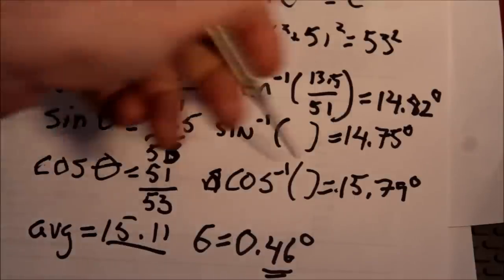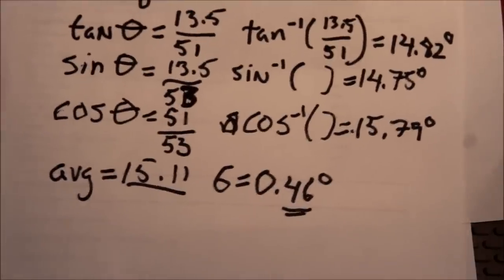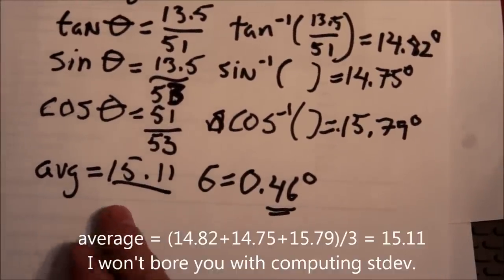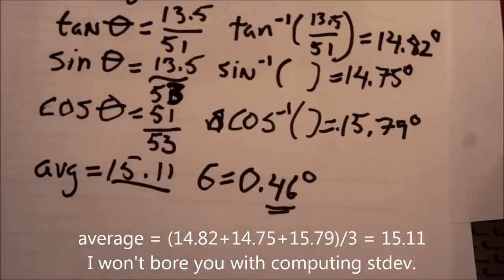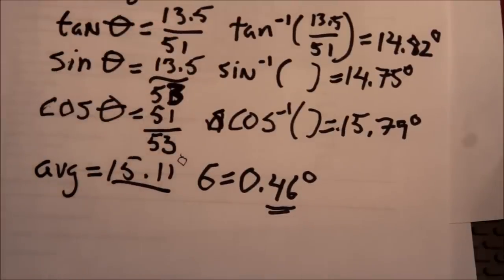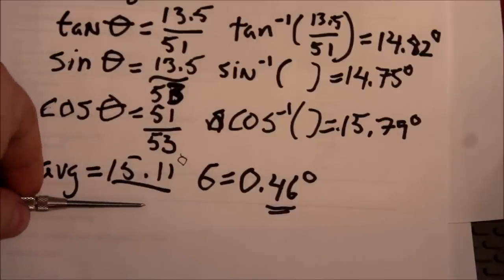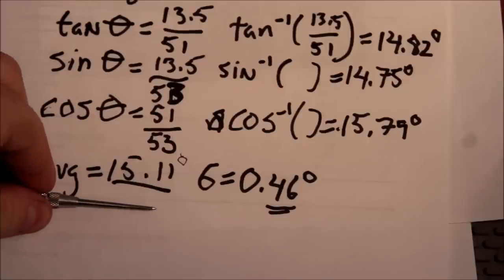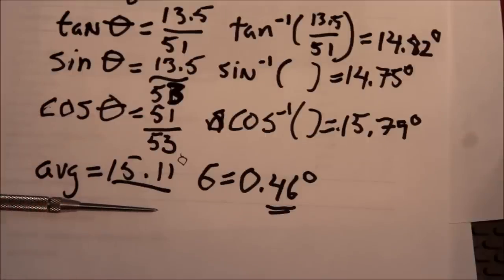But just to see what the error was, I computed an average. So that's just the sum of those three numbers divided by 3. 15.11 with a standard deviation of 0.46 degrees. And this should say degrees here, but that's okay. And so I conclude that it's close enough to 15 degrees, that I can use that as a target for regrinding the little tip of this thing. It's currently at about probably 30, 35 degrees, something like that.